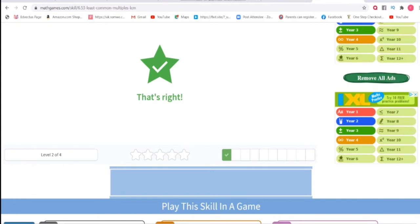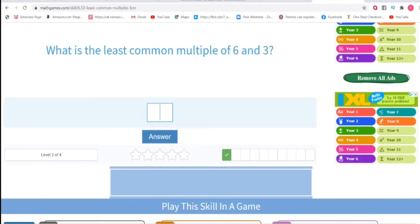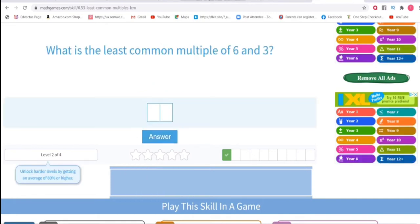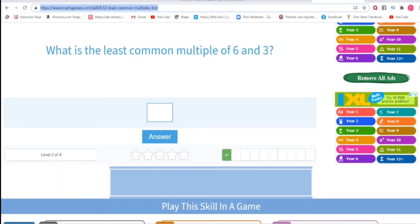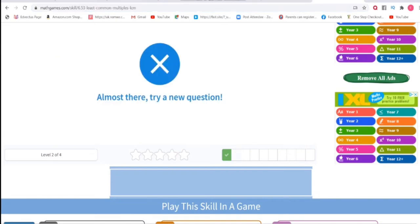And it says that's right, and it gives me another one. I'm actually at level 2 as you can see here because I started before. So let's just continue. Here it says what is the least common multiple of 6 and 3, and that's 18, so you put that in.